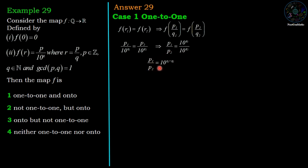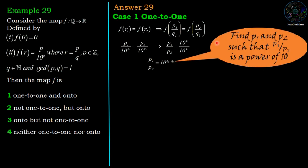This equals p1/p2 = 10^(q1-q2). Find p1 and p2 such that p1/p2 is a power of 10.